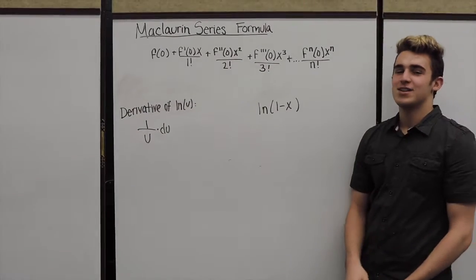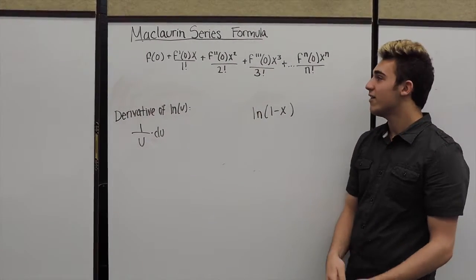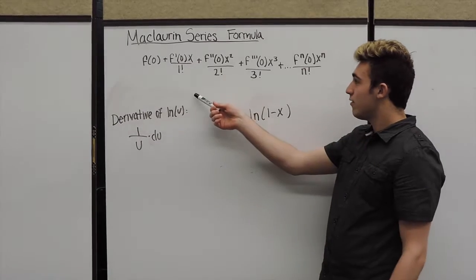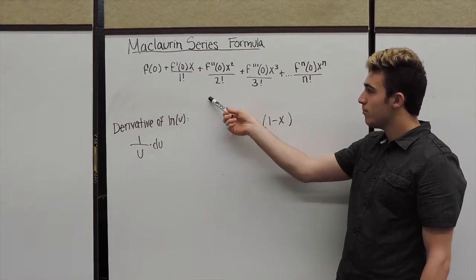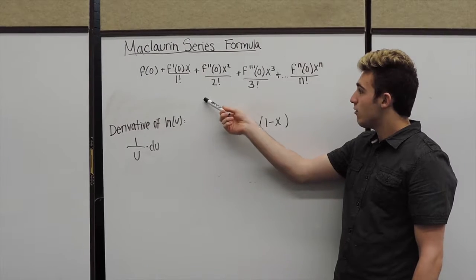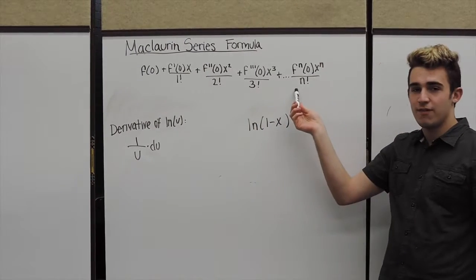Alright, so you guys should know the general formula for the McLaurin series. As you see, we have f of 0 plus your f prime of 0 times your x variable over 1 factorial. And you want to keep going all the way to your desired n value.